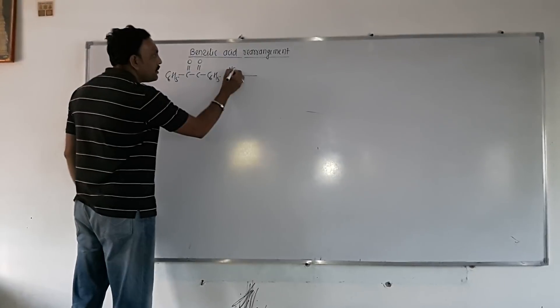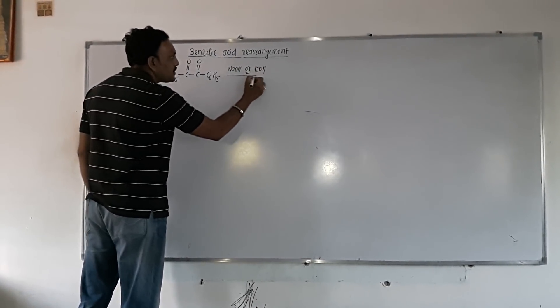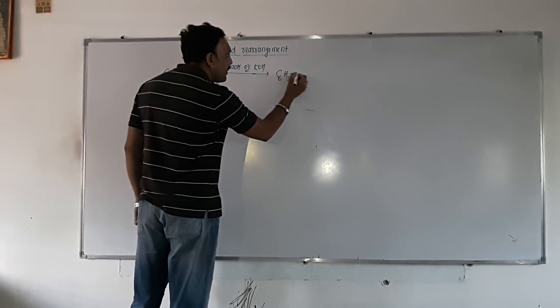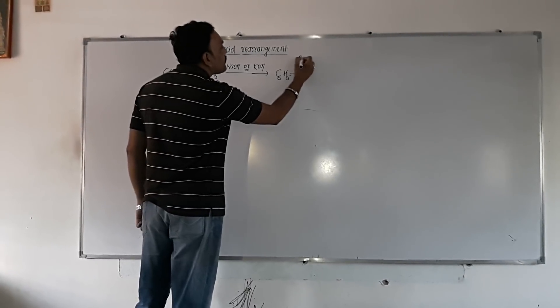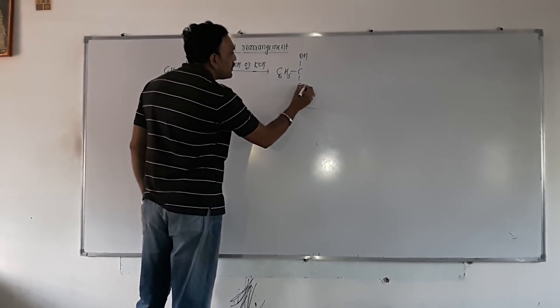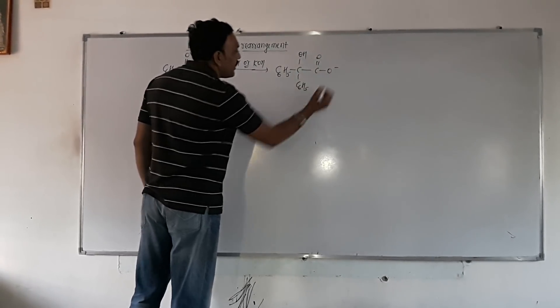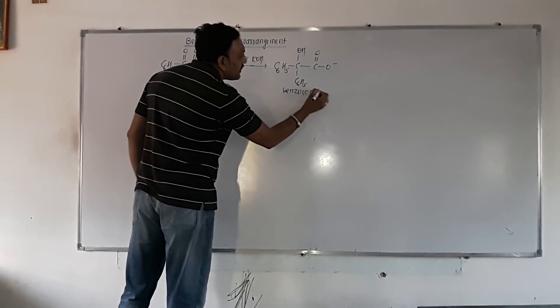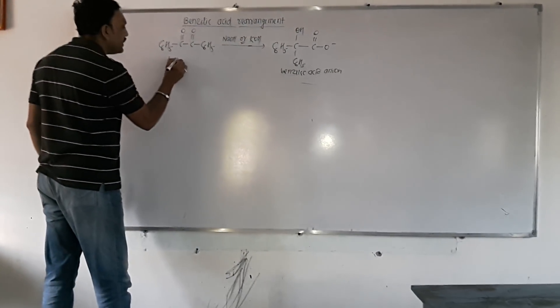Benzil when treated with bases like NaOH or KOH, then ultimately benzilic acid anion is obtained which can be represented as. So, this is the benzilic acid anion. And this one is benzil.